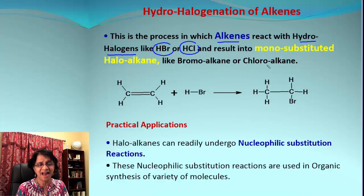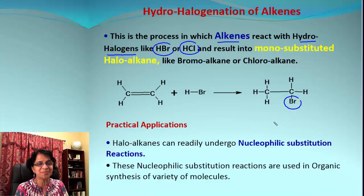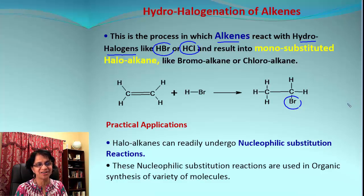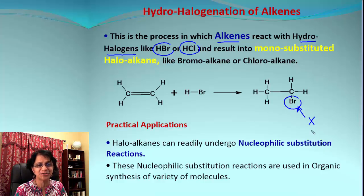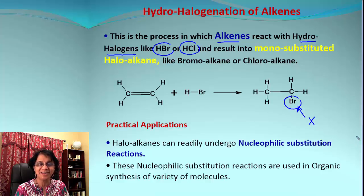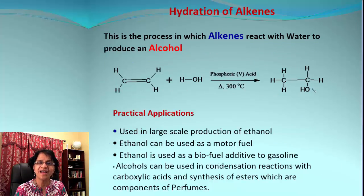The next one is hydrohalogenation, in which alkenes react with hydrohalogens like HBr or HCl — that's hydrobromic acid or hydrochloric acid — and we end up having mono-substituted haloalkanes, as shown here. The practical application is that haloalkanes can readily undergo nucleophilic substitution reactions, meaning the bromine in haloalkanes can be substituted easily by any other substituent X. Therefore, nucleophilic substitution reactions are used in organic synthesis of a variety of molecules.